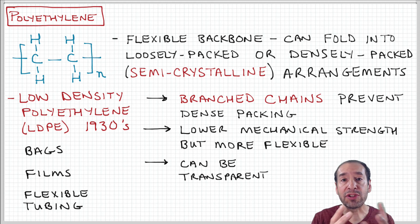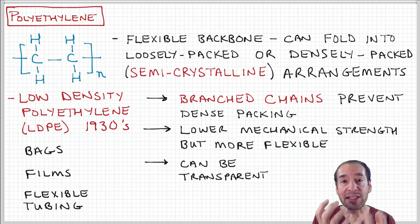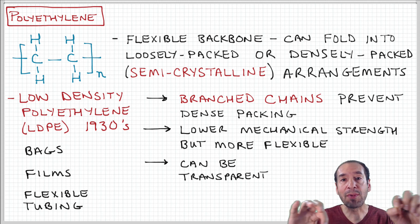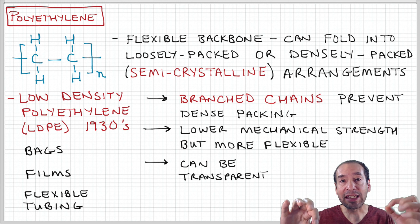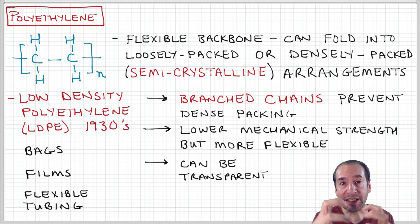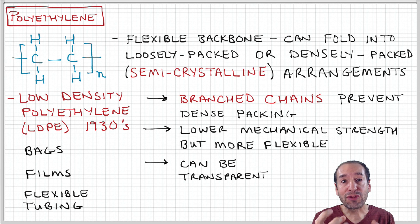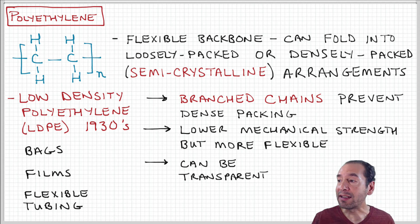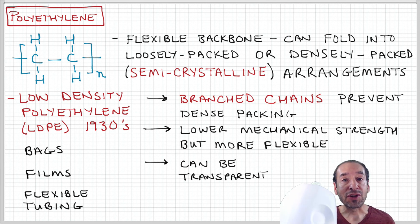That is again a result of the fact that you have the same basic monomer structure, but because you have branches in low-density polyethylene, it can't compact as densely. Therefore, it's a softer material than high-density polyethylene that you see in milk jugs.